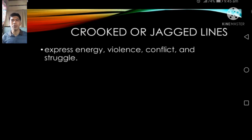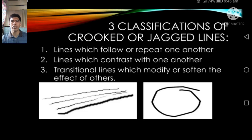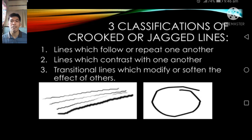Croc or jagged lines express energy, violence, conflict, and struggle. There are three classifications: first, lines which follow or repeat one another; second, lines which contrast with one another; and third, transitional lines which modify or soften the effect of others.